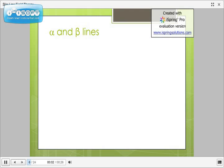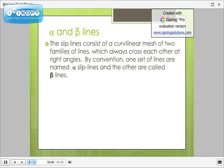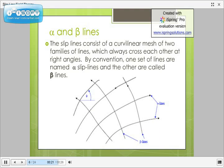Now, let us define what are slip lines in Slipline Field Theory. These are the alpha and beta lines. The slip lines consist of a curvilinear mesh of two families of lines which always cross each other at right angles. By convention, one set of lines are named as alpha slip lines and the other are called beta lines. As you can see in the diagram, alpha lines and beta lines intersect each other at right angles.